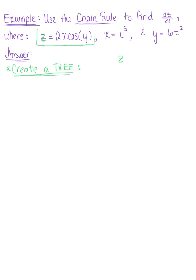Looking at this given function, z, we can see that it is in terms of x and y. So z is a function of both x and y. Then looking at x, we can see that x is a function of t. We create another branch, and then we have y is equal to 6t squared, so y is also a function of t.